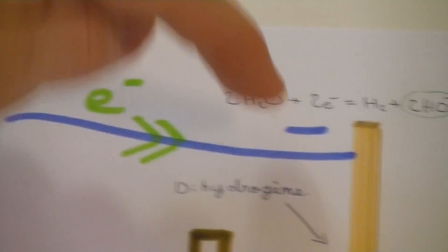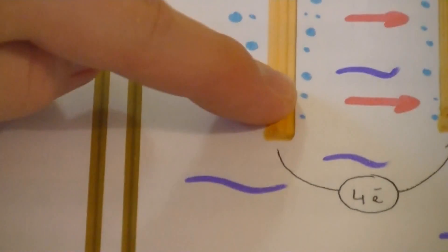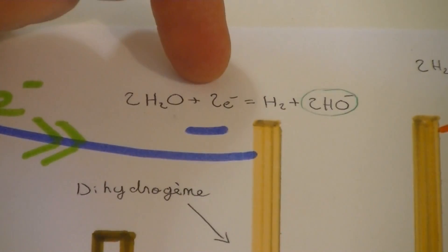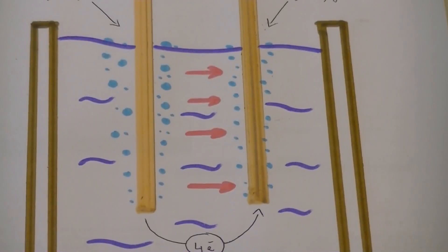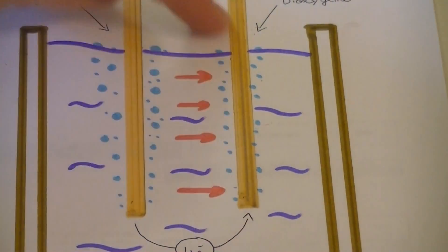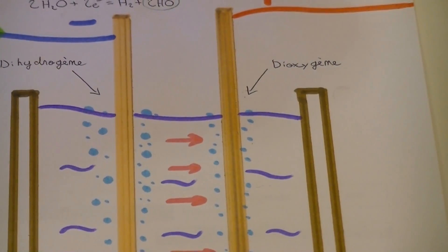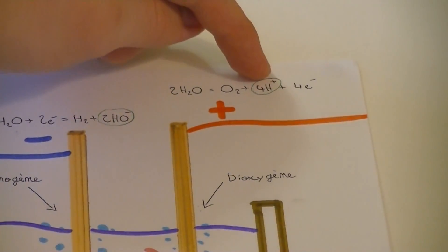The plate on the negative side receives electrons. The water reacts with those electrons, generating dihydrogen and another compound. Around the plate on the positive side, the water turns into dioxygen and another compound and releases electrons.